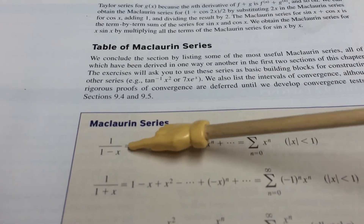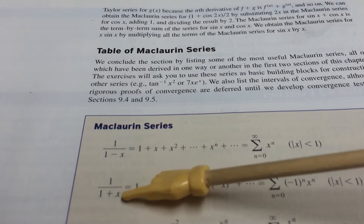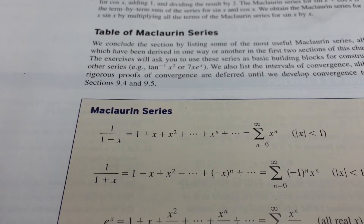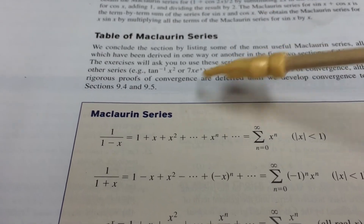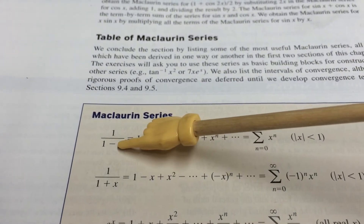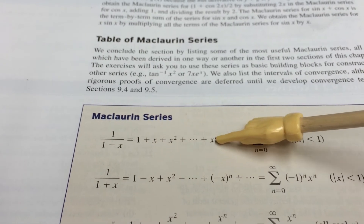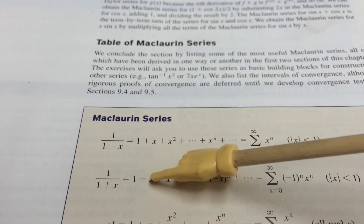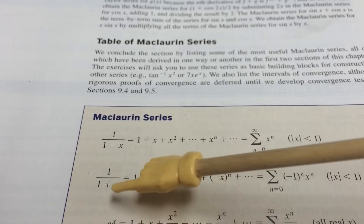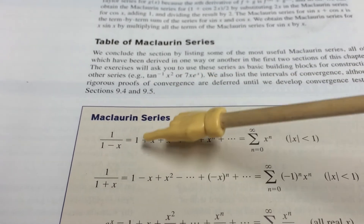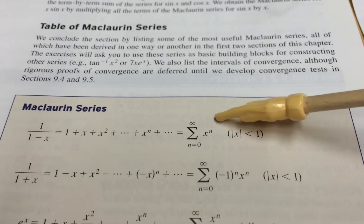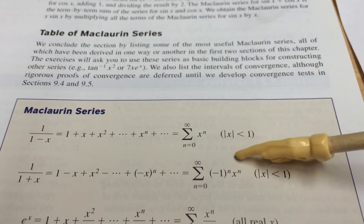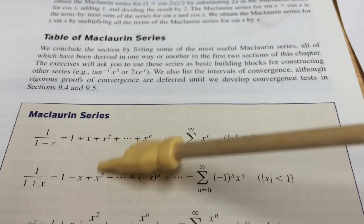For example, 1 over 1 minus x and 1 over 1 plus x are pretty much the same — the nice thing is they're related. We have to start memorizing this because on the AP test it makes it easier if you know the pattern. The difference is that if the denominator is minus, all terms are plus; if it's plus, then the series alternates. So for the plus case it alternates, and for the minus case it's all pluses. This is the general equation, which will also help when we find convergence later in the chapter.